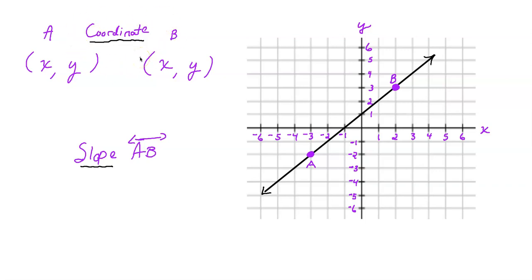Coordinate just means direction or movement. So if you were taking a test and you were asked to find the coordinate of point A, you need to figure out how many units horizontally and vertically you need to move to get to this point. You start here at the origin and ask yourself how many units do I need to move on the x-axis and how many units on the y-axis to get to point A. That's a coordinate — it indicates movement.